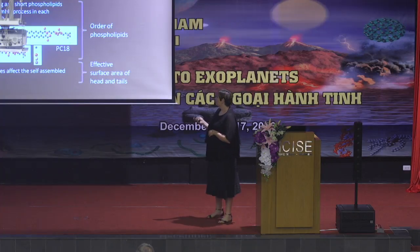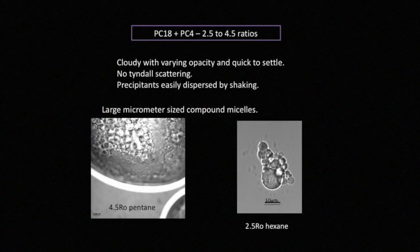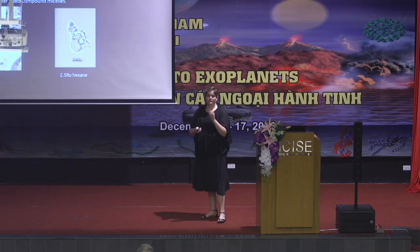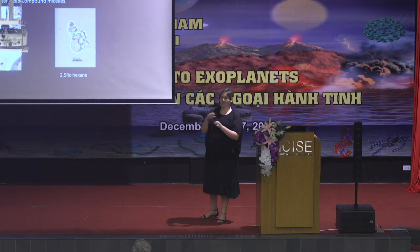Here are some of the more interesting results. At lower ratios of just the large and small phospholipids, what you get is these very large structures of compound micelles — this wasn't what I was originally expecting. I wanted reverse vesicles, which have an internalized liquid core to be like a cell membrane. However, these can have a use for life on Titan because polar solutes aren't very soluble in non-polar liquids. Smaller versions of these structures could solubilize those polar solutes and therefore be able to bring them into the cell and use them.